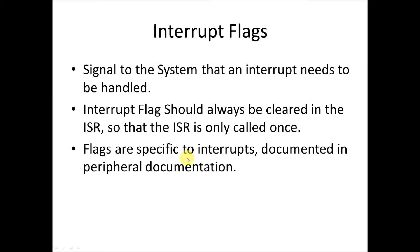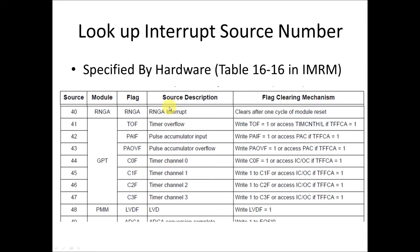These flags are specific to each interrupt and documented in the peripheral documentation. When we look up our interrupt source number, it tells us what flag to clear. For our example, we're looking for the general purpose timer overflow event. Looking it up in the table, we find it's source number 41, the flag is TOF, and it's a bit in the general purpose timer module. To clear it, we write a 1 to the TOF bit. This gives us all the information we need to write our interrupt service routine.